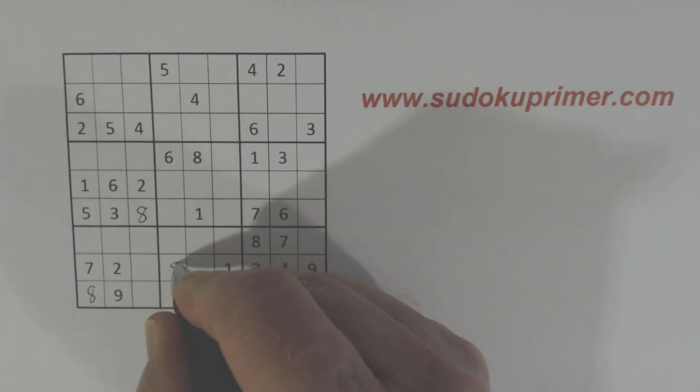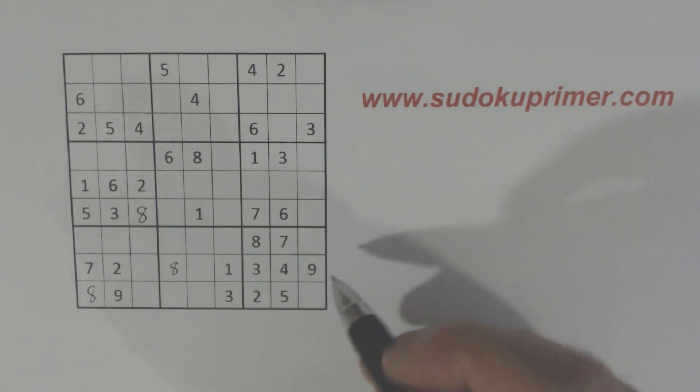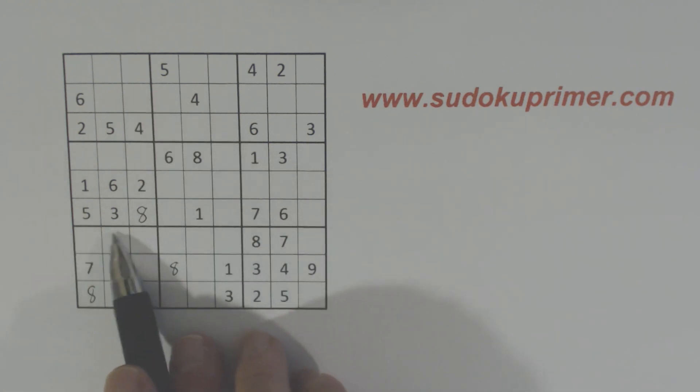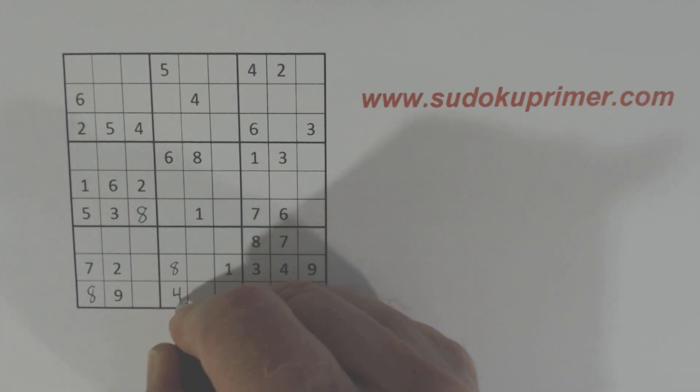And we've got an 8 right here. And right now we have a 7 here and a 7 here. So one of these is a 7. We also have a 4 here and a ghost 4 here. So one of these is a 4. So we have 4-7 twins right there. And there's a 4 there so we can solve them.